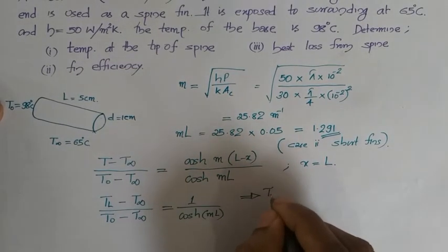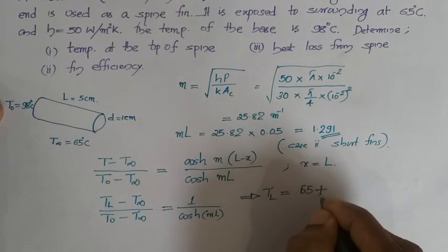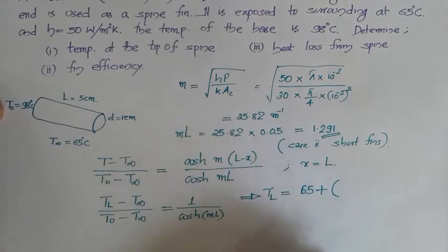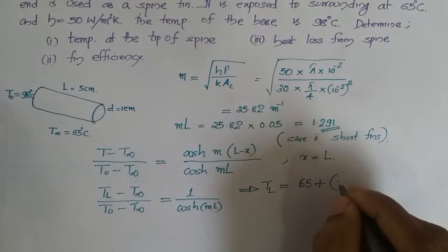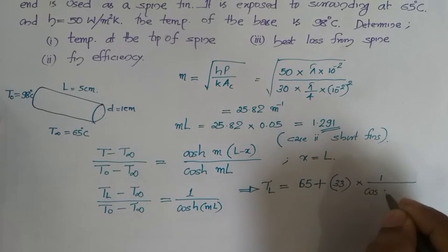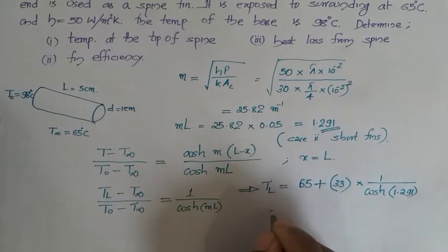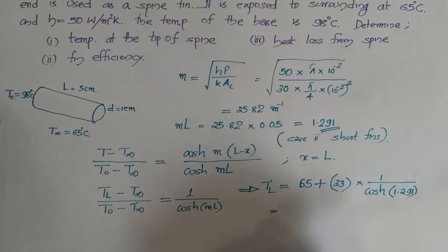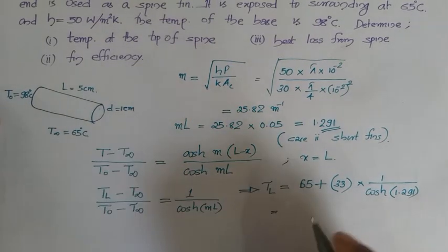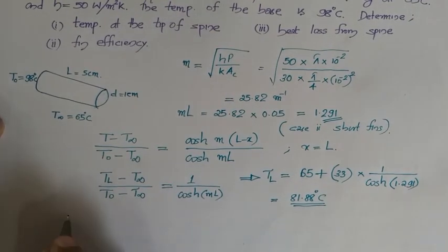Substituting values: T_L equals T∞ (65) plus (T₀ minus T∞), which is 90 minus 65 = 33, into 1 divided by hyperbolic cosine of M·L (1.291). Using the calculator for hyperbolic cosine of 1.291, the temperature at the tip comes out as 81.88 degree Celsius. This is the answer for the first part.